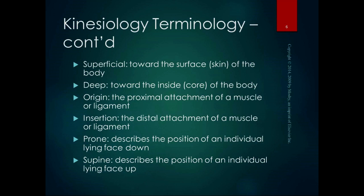When it comes to muscles, the pair we talk about is origin and insertion. The origin refers to the proximal attachment of a muscle — the attachment closest to the core of the body. The insertion is the distal attachment — the one farthest from the core. During concentric muscle contraction, the muscle shortens and the insertion moves toward the origin. We'll also talk about reversal of muscle function, where the origin moves toward the insertion.